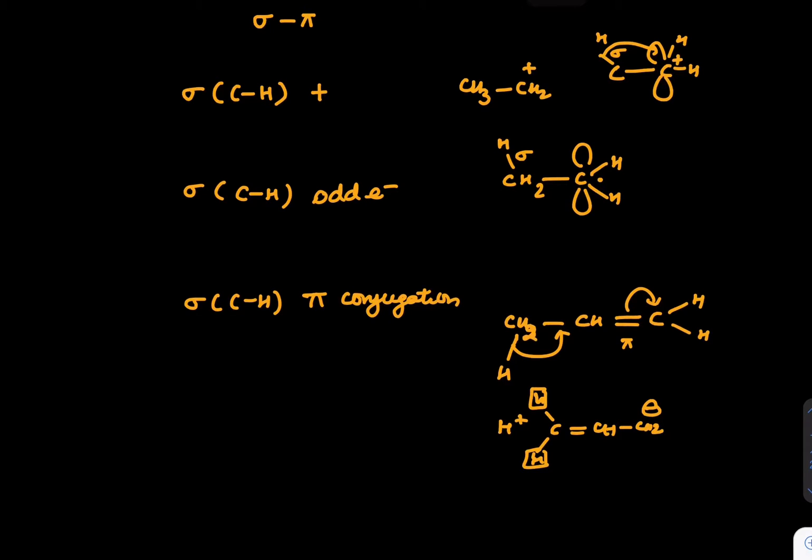Number of hyperconjugations you can simply count. Just go to the alpha position. Alpha means this is the C=C, so alpha is the next position. Count how many H are there. In this structure, 3H, that's why it is 3 alpha H or 3 hyperconjugations. More the number of hyperconjugation, more the stability of alkene.